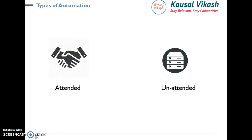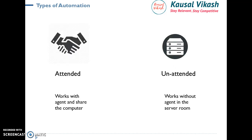These bots, robots, or digital workforce come in two different types: Attended Automation and Unattended Bot Automation. Sometimes these are called Assisted Bot and Unassisted Bot. Let's understand what Attended and Unattended Bots are.